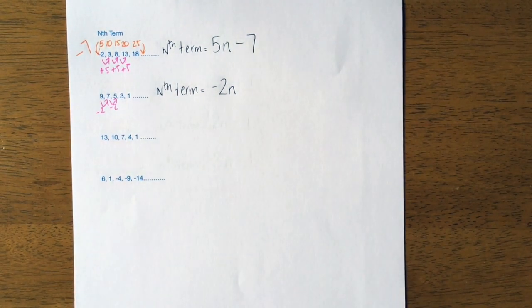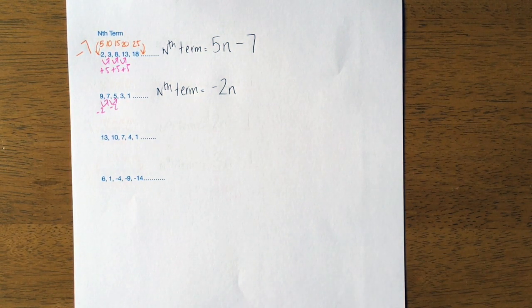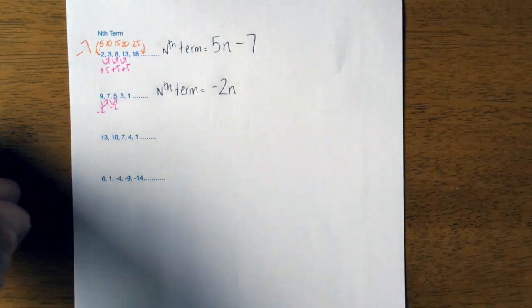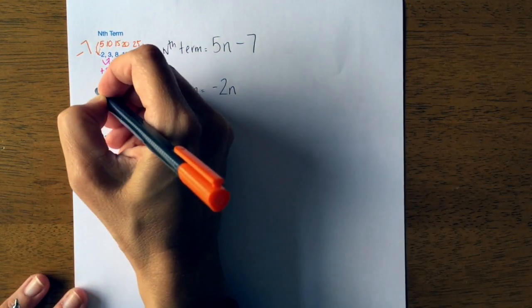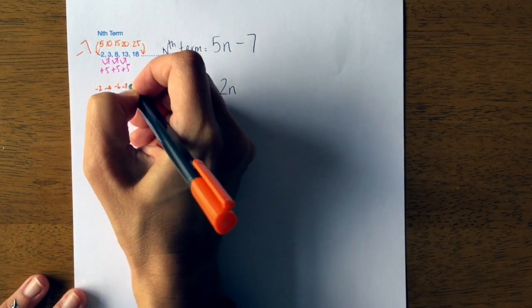Now I need to find the difference. I need to see how my negative 2 times table has been altered to get to this pattern. So I would need to write out my negative 2 times table: negative 2, negative 4, negative 6, negative 8, negative 10.